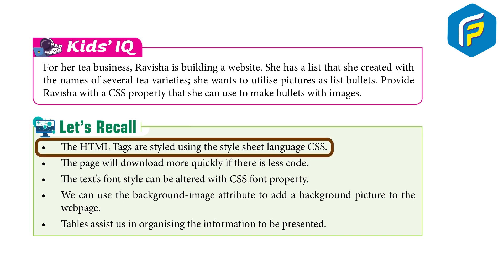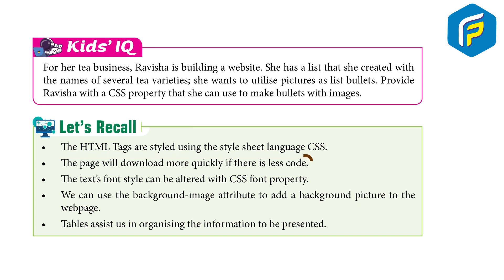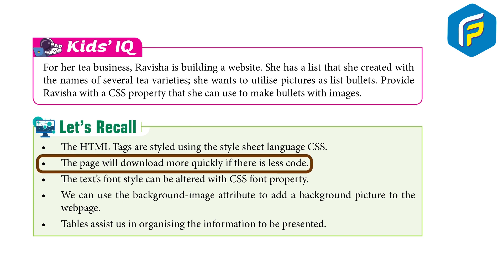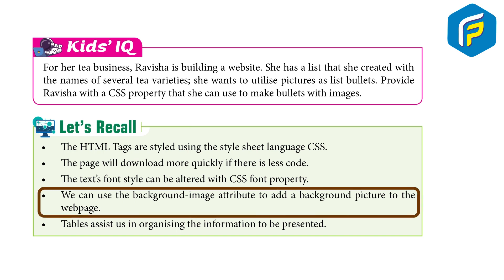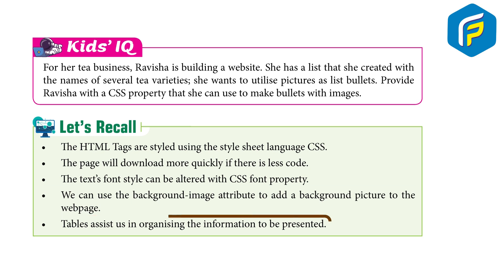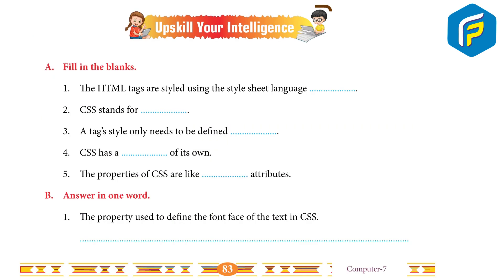Recap: the page will download more quickly if there is less code. The text font style can be altered with the CSS font property. We can use the background-image attribute to add a background picture to the web page. Tables assist us in organizing the information to be presented.